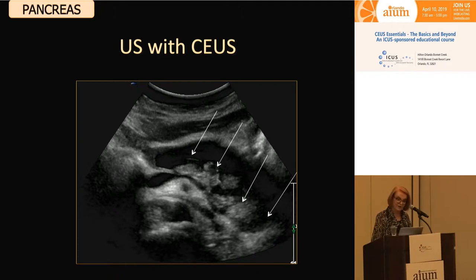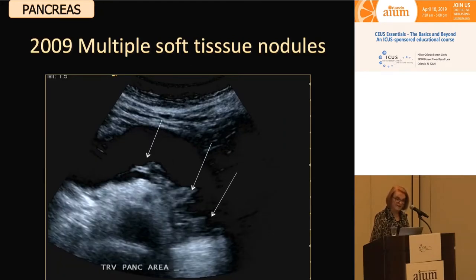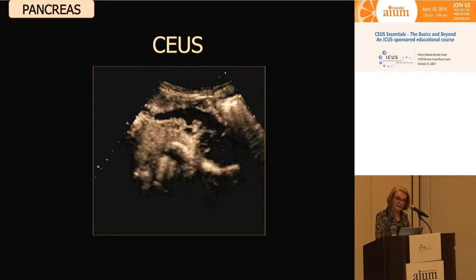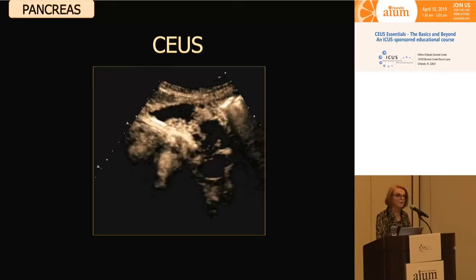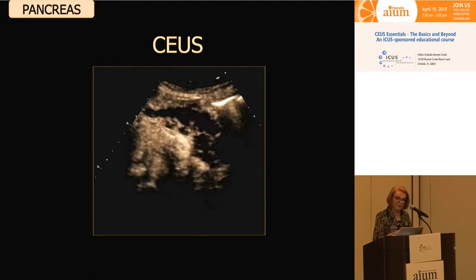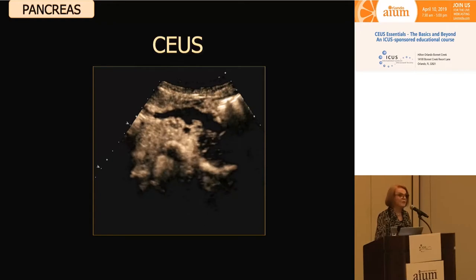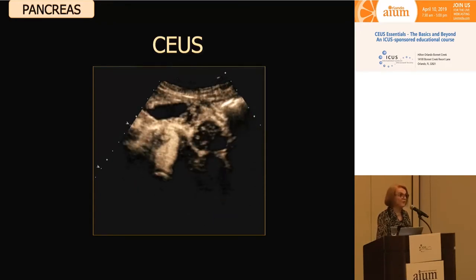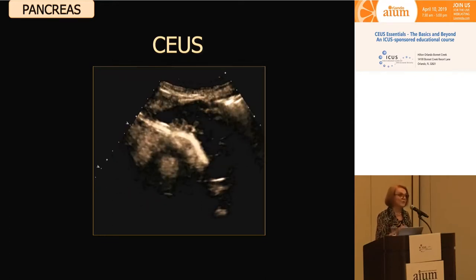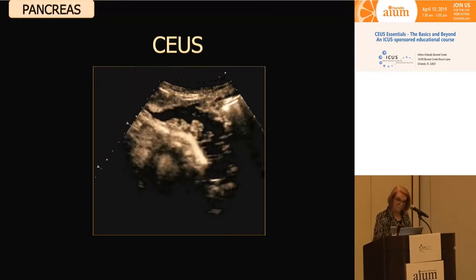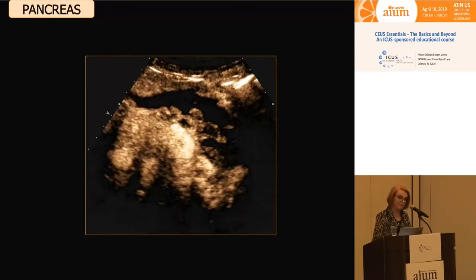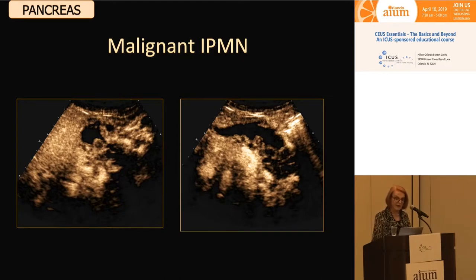Within this dilated duct, there are now multiple papillary excrescences arising from the posterior wall. Looking back at the 2009 scan, those papillary excrescences are there, but much smaller. On contrast-enhanced ultrasound looking at that duct, those are in fact hyper-enhancing nodules within the duct. Ultrasound has improved spatial resolution for showing these papillary excrescences, and CEUS has superior sensitivity to its tracer in the arterial phase. This is a malignant papillary tumor of the pancreas, which was surgically confirmed — a malignant IPMN, beautifully shown on ultrasound.